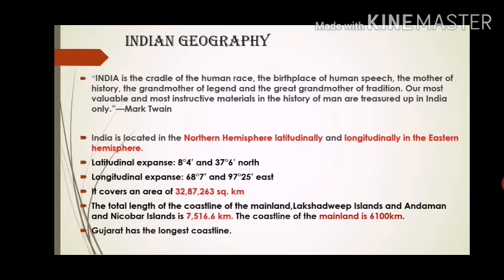The total length of the coastline — including the mainland, Lakshadweep Islands, and Andaman and Nicobar Islands — is 7,516.6 kilometers. If we talk about the mainland coastline alone, it is 6,100 kilometers. Out of all the states, Gujarat has the longest coastline — this is a common exam question.